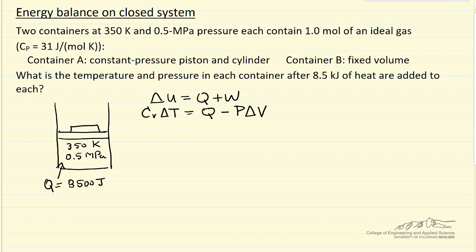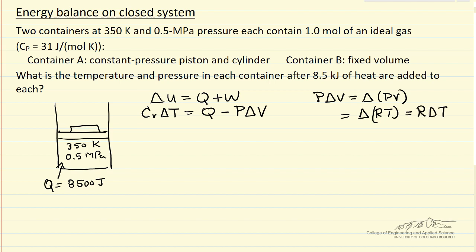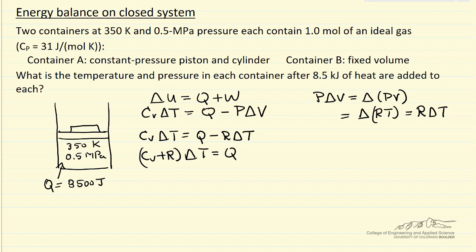Since we're dealing with an ideal gas, we can take advantage of the ideal gas relations. At constant pressure, P·ΔV is the same as Δ(PV). Because this is an ideal gas with one mole, that equals Δ(RT), which equals R·ΔT. Substituting into the first law and rearranging, we bring the R·ΔT term across, so Cv + R equals Cp for an ideal gas.